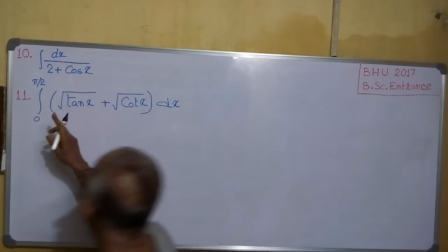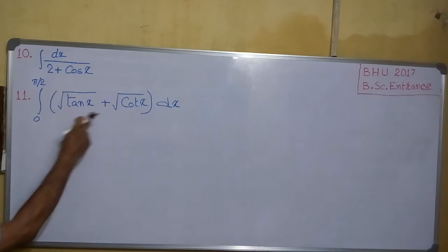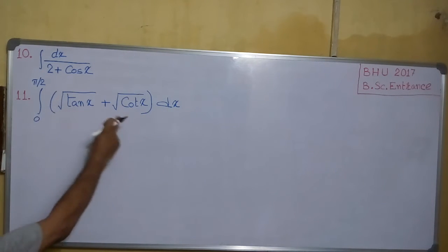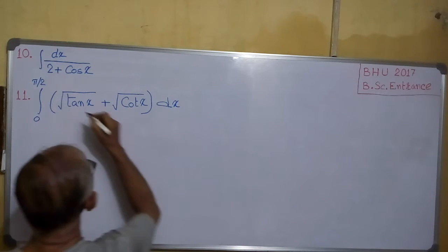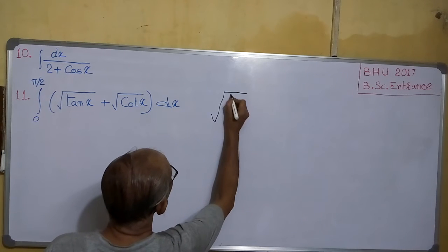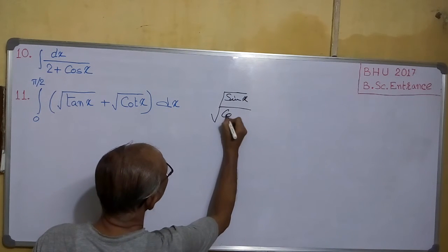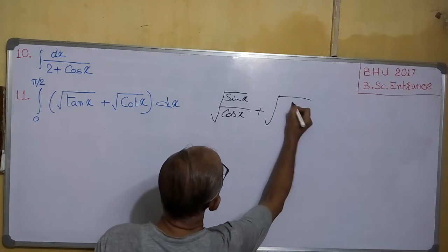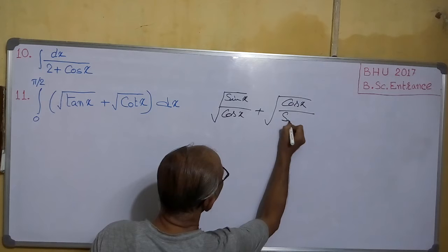Welcome. See these sums. First I am showing you this one. It is the integral from 0 to π/2 of √(sinx/cosx) + √(cosx/sinx) dx. We can write this as √(sinx/cosx) + √(cosx/sinx).